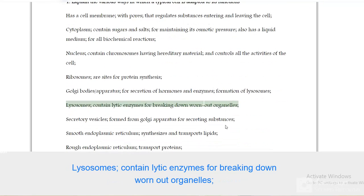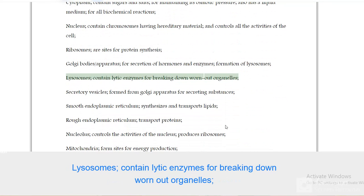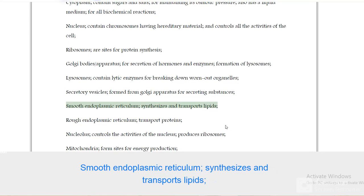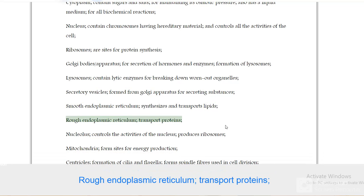Lysosomes contain lytic enzymes for breaking down worn-out organelles. Secretory vesicles formed from Golgi apparatus for secreting substances. Smooth endoplasmic reticulum synthesizes and transports lipids. Rough endoplasmic reticulum transports proteins.